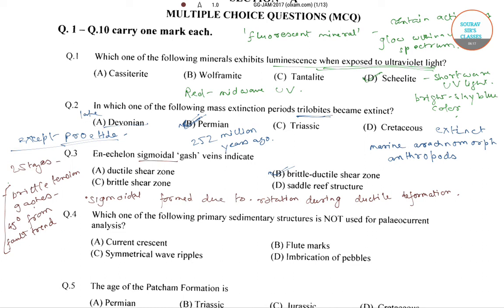So these en-echelon veins are formed in two stages: in the first stage, brittle tension gashes are formed which are oriented at 45 degrees from the fault trend, and in the second stage, sigmoidal shapes are formed due to rotation during ductile deformation. The correct answer is option B.